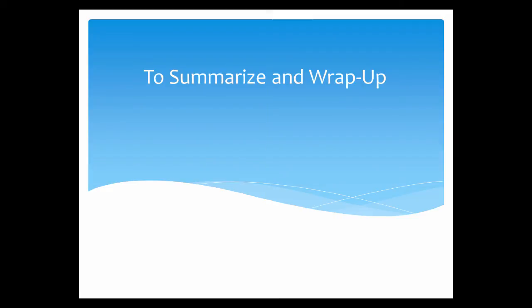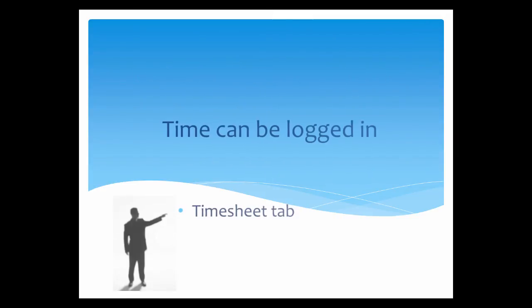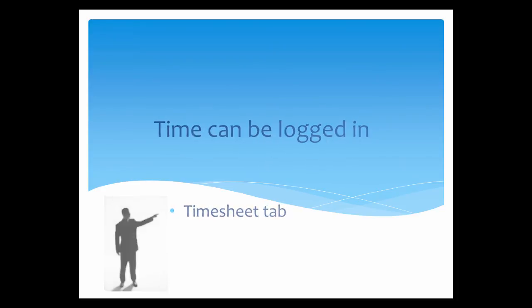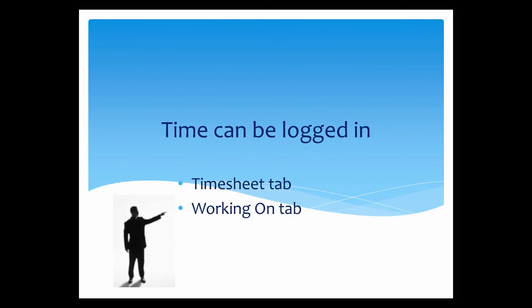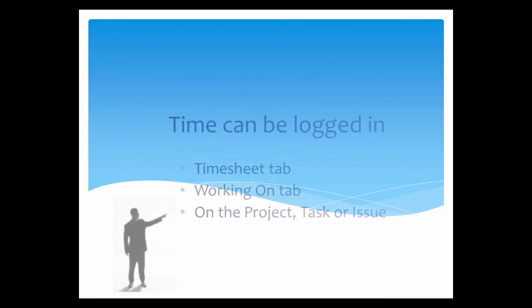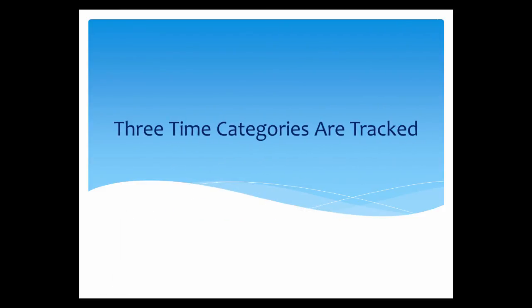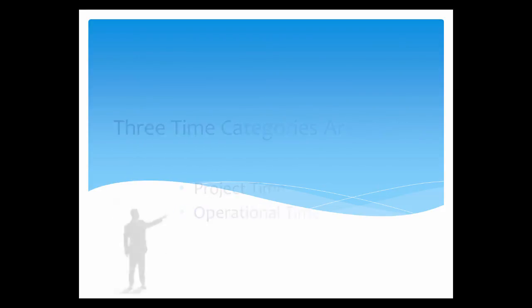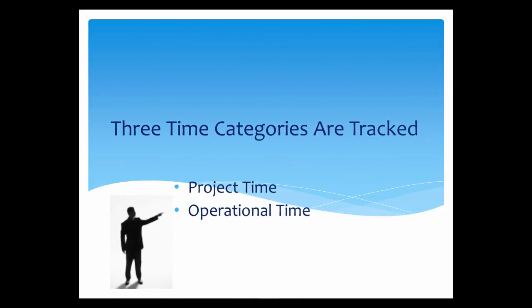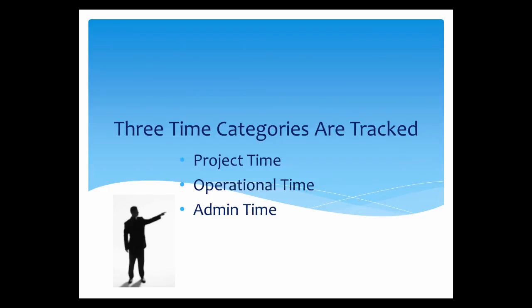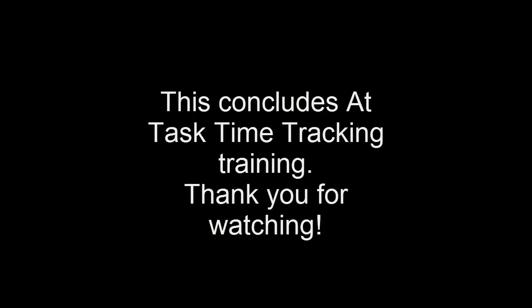Let's summarize and wrap up. Time can be logged in the Timesheet tab, in the Working On tab, or directly on a project, task, or issue. Three time categories are tracked: Project Time, Operational Time, and Admin Time. This concludes ATTASC Time Tracking Training. Thank you for watching.